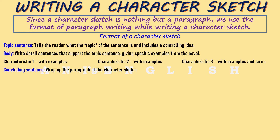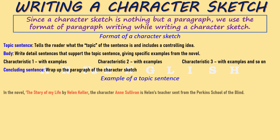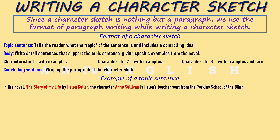In this video I have written a small character sketch of Miss Anne Sullivan, the teacher of Helen Keller. In the novel 'The Story of My Life' by Helen Keller, the character Anne Sullivan is Helen's teacher, sent from the Perkins School for the Blind. This is my topic sentence, where I introduce my character, give the location, and convey the controlling idea of the paragraph.